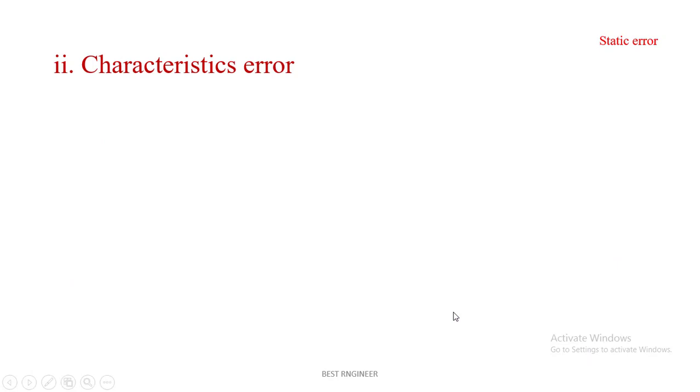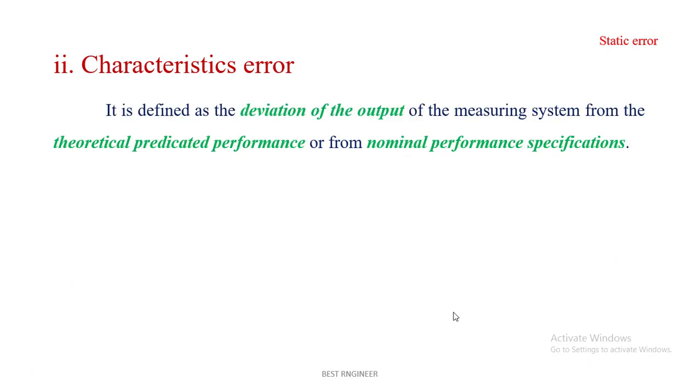Characteristic error: it's defined as the deviation of the output of the measuring system from the theoretical predicted performance or the nominal performance of specification. This is called characteristic error.